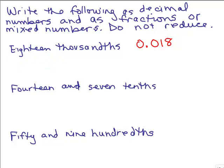So we've written it as a decimal. Now how do we write that as a fraction? It's actually easier to take it from here. 18 thousandths means you've got 18 over a thousand. Let's look at the second one.